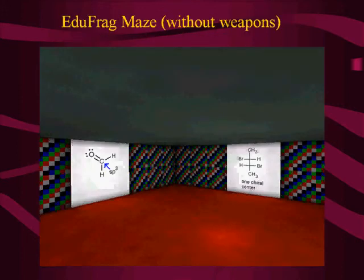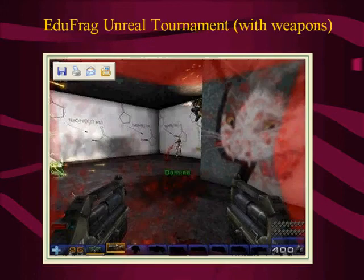Before Second Life, I actually used games like Unreal Tournament — it's a first-person shooter game that comes with an educational version that has no weapons. Students basically go around in these mazes and click on doors. If it's correct, they move through; if it's incorrect, they get penalized somehow. When there's weapons, of course, you can have them die.